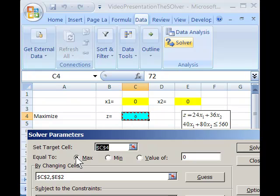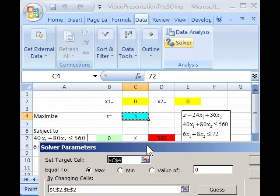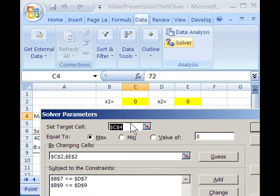This is a maximization. If you're doing a minimization problem, you would select minimization. The cells that we are changing remain the same as the equality ones. We're going to be changing the cell that holds the value for X1, and the cell that holds the value for X2, which are C2 and E2.